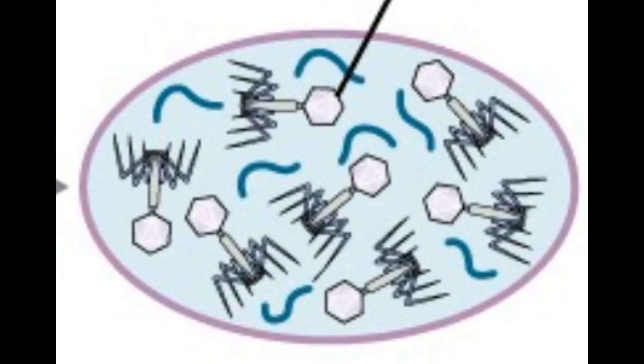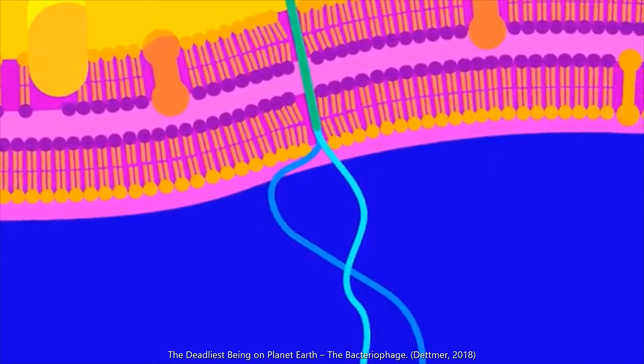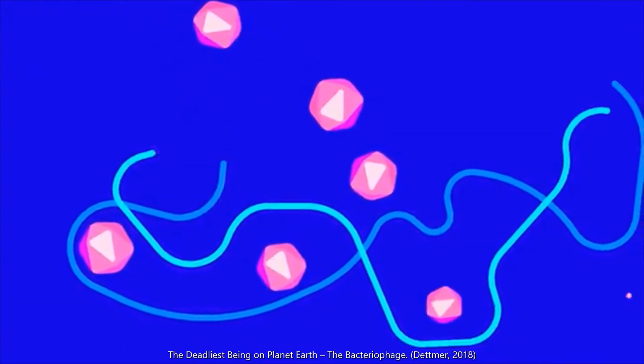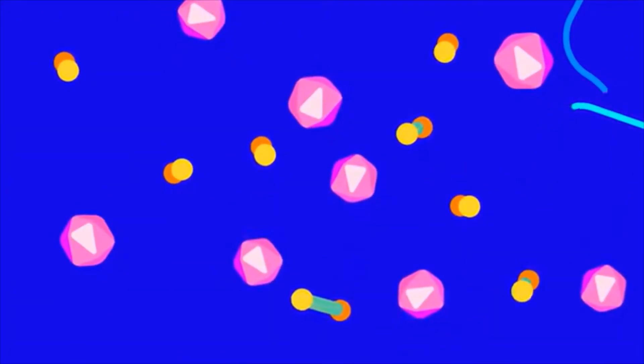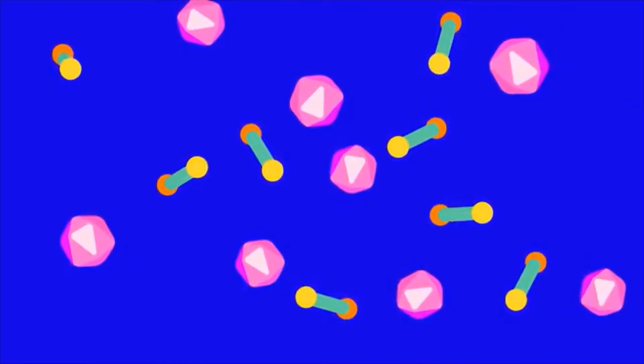Next, in the third stage called replication or biosynthesis, the DNA or RNA of the viral body is replicated inside of the host cell and viral proteins are also made.